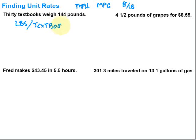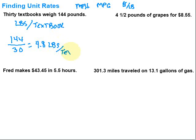I'm going to set it up with the pounds on top — 144 — and per is division, so divided by the number of textbooks, in this case 30. Just grab my calculator and figure that out. So 144 divided by 30 is going to give me 4.8. And my label is just what I wanted it to be — 4.8 pounds per textbook. So each textbook weighs 4.8 pounds in that situation.